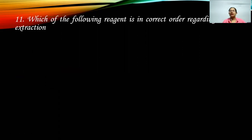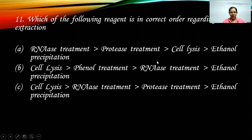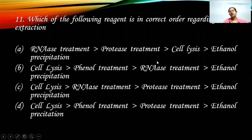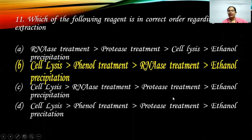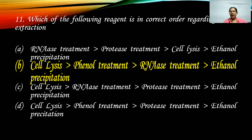Last question: which option shows the correct order of steps in DNA extraction? The first step must be cell lysis, followed by phenol treatment, then RNase treatment — because if you're interested in DNA you don't want RNA, so RNase is added to degrade any RNA present — and finally ethanol precipitation. At the end there should be no protein or RNA contamination.